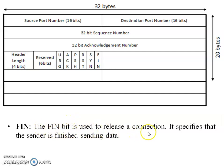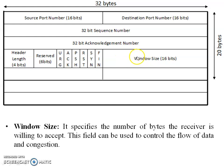The FIN bit is used to release a connection. When the sender has completely sent all the data to the receiver and wants to terminate the connection, the FIN flag is set to one. Window size specifies the number of bytes the receiver is willing to accept. This field is used to control the flow of data and congestion, because TCP provides flow control and congestion control.